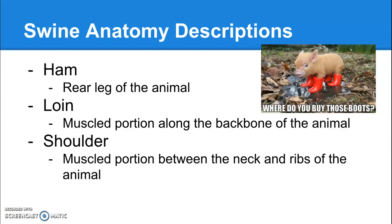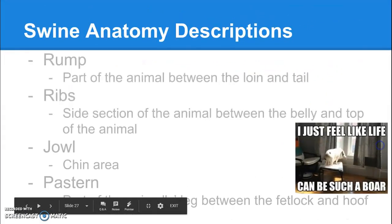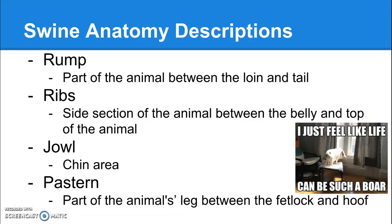The shoulder is the same in the pig as it is in the cow — the muscled portion between the neck and the ribs. The rump is the part of the animal between the loin and the tail, kind of the bum part — same as in the cattle.